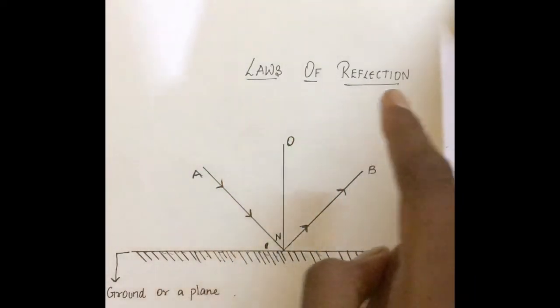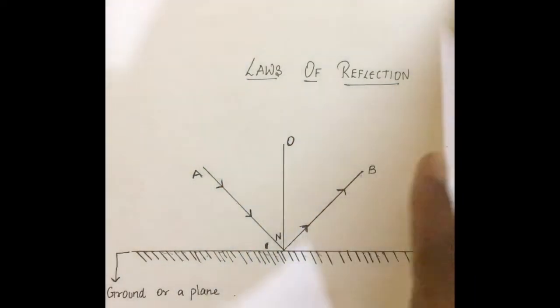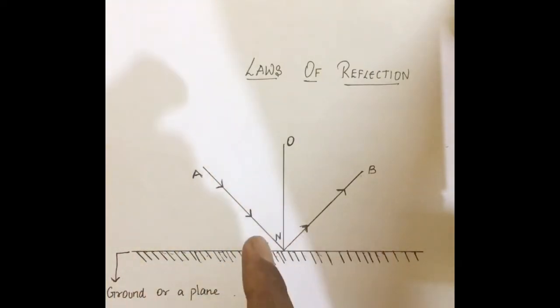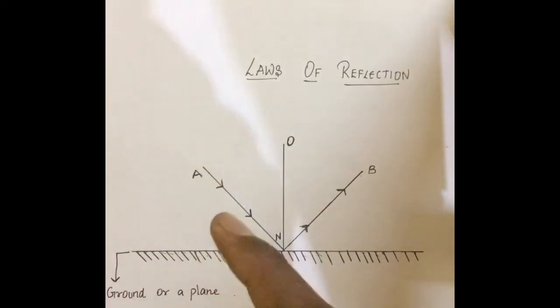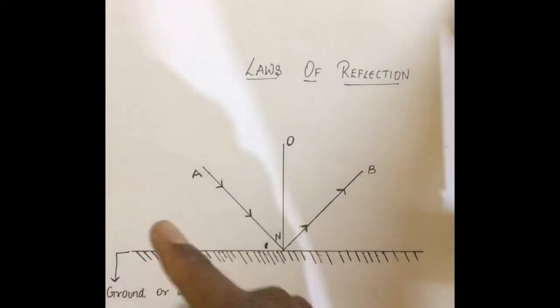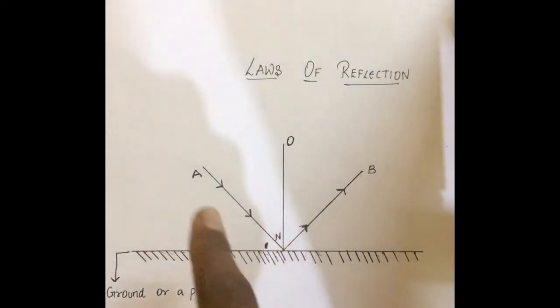Let's move deeper. Based on the striking and reflecting of light, scientists have derived two laws called the laws of reflection. Before going into the laws of reflection, you should know some terminologies related to them in order to understand them more deeply. I have made a setup here. The first thing to be explained is the ground or plane where the setup is placed. The next thing is the incident ray — the incident ray strikes the plane mirror at a point.